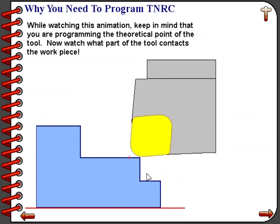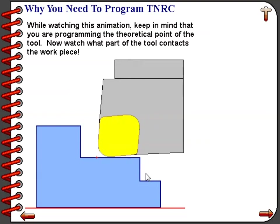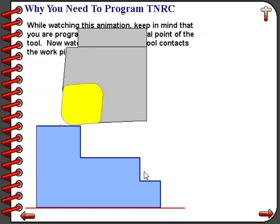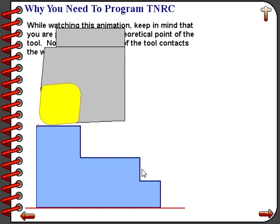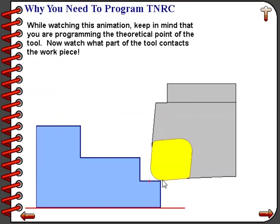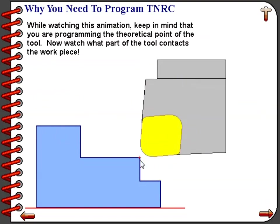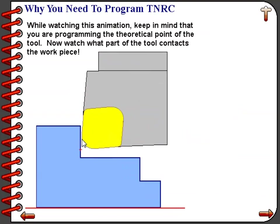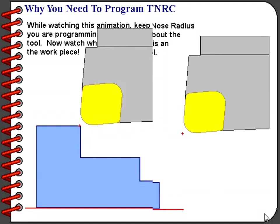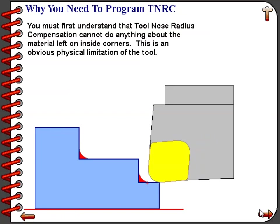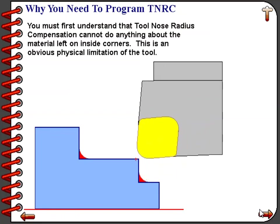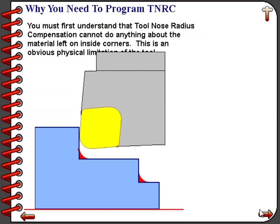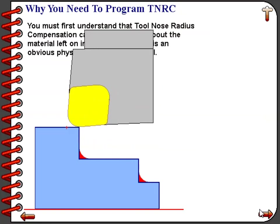To illustrate the difference between programming the theoretical sharp point and the actual radius of the tool, watch this animation. We are always programming and positioning that sharp point of the tool. Watch closely to see what part of the radius on the insert is actually coming into contact with the workpiece. The highlighted area shows the portion of the workpiece not being cut by the radius of the insert. Tool nose radius compensation cannot cure this problem — it is strictly a limitation of the tool.